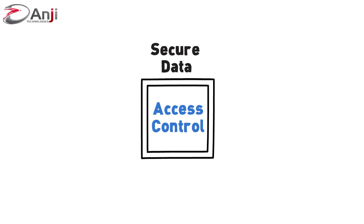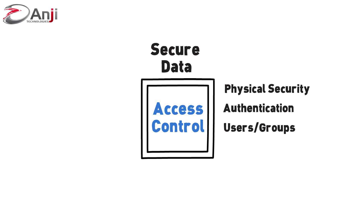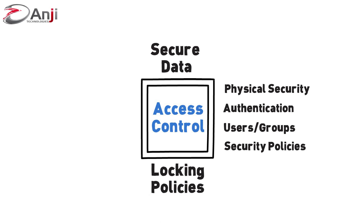Another way to secure data is through access control, a key in controlling who gets to see the data, programs, and other computing resources. There are four key areas: physical security, authentication, user groups, and security policies. As an example of a security policy, educate users about locking policies. For a Windows operating system, press Windows key plus L to lock the system from other users.